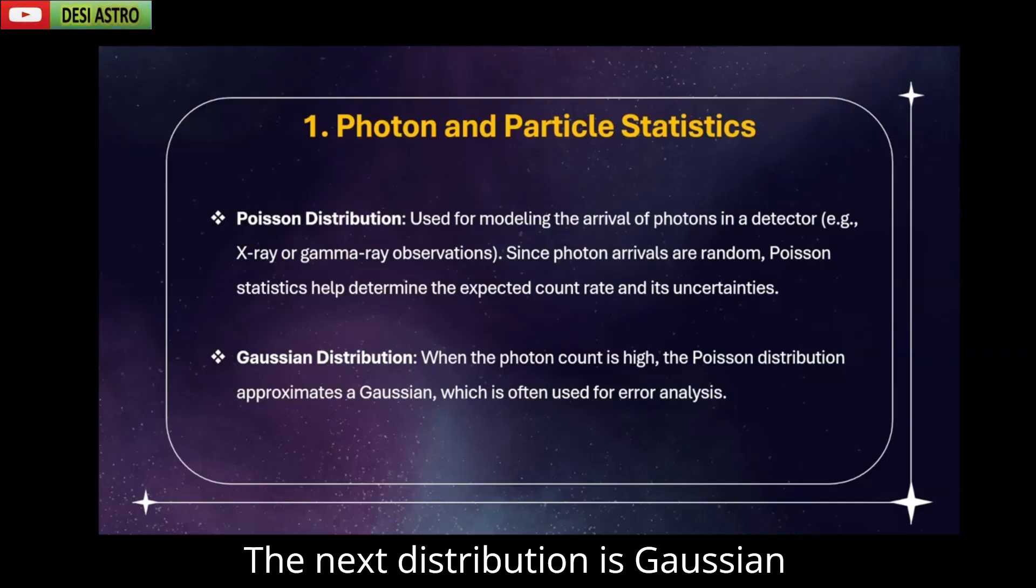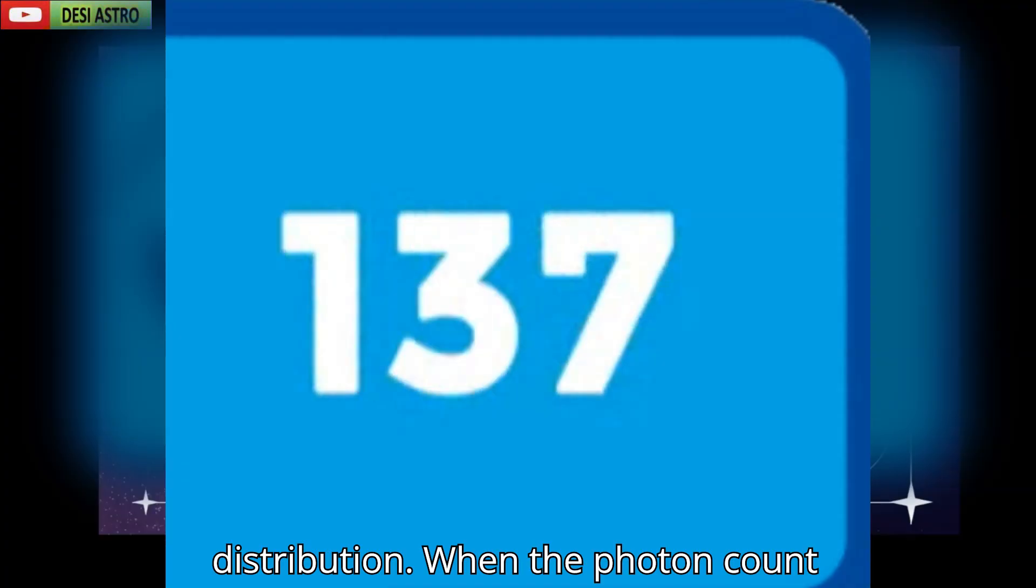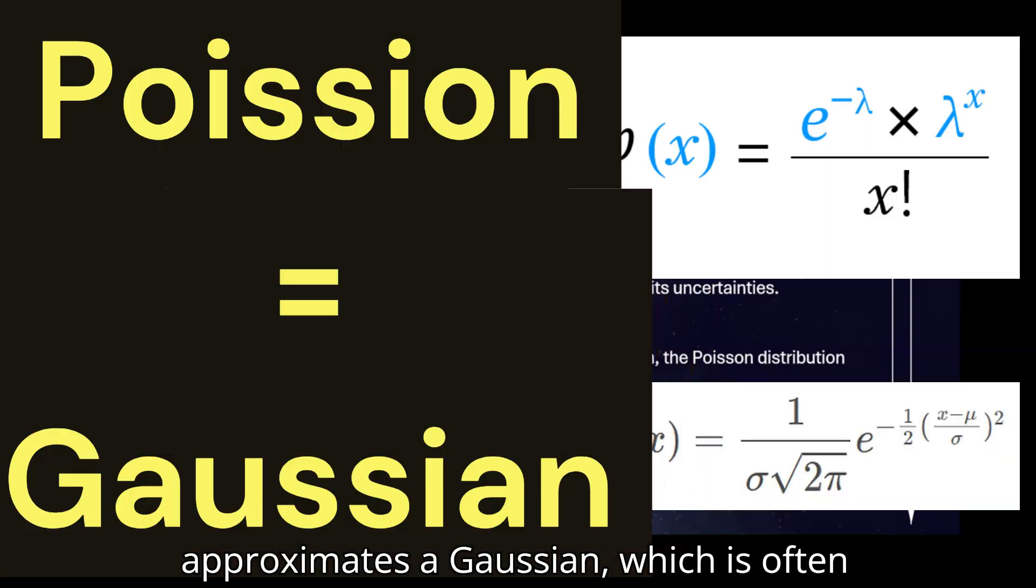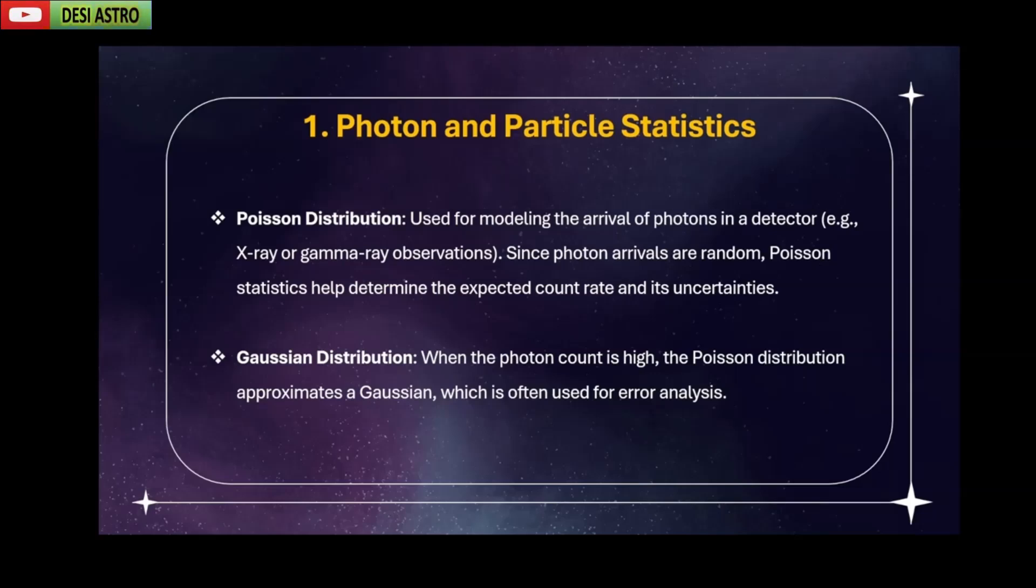The next distribution is Gaussian distribution. When the photon count is high, the Poisson distribution approximates a Gaussian, which is often used for error analysis. For example, the background noise in X-ray astronomy is often modeled as Gaussian.